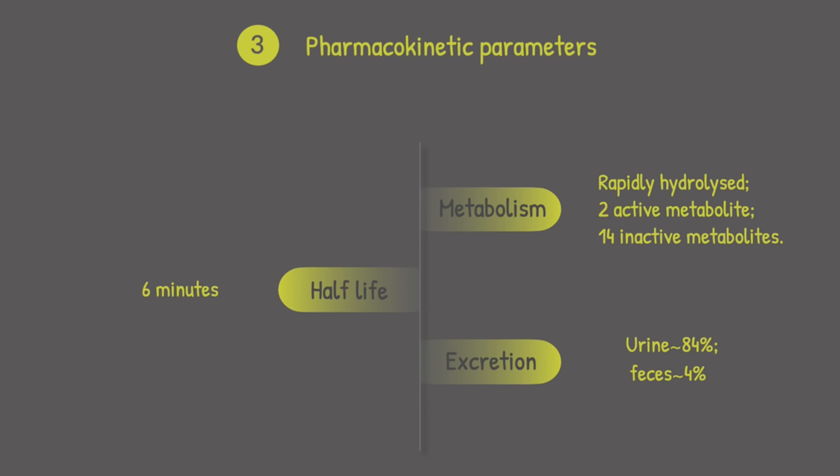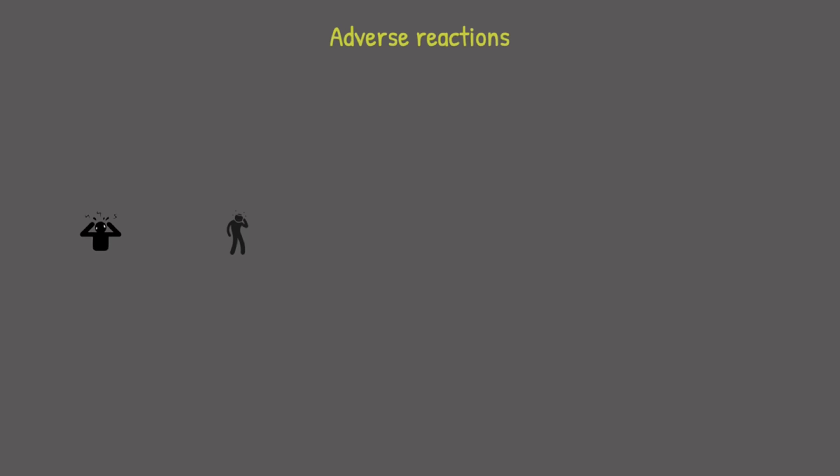Epoprostenol has a half-life of approximately six minutes, meaning it takes six minutes to reduce its concentration to half in the bloodstream. For excretion, approximately 84% of Epoprostenol is excreted via urine and 4% via feces.